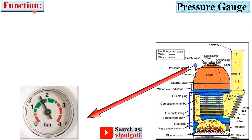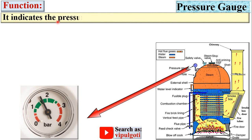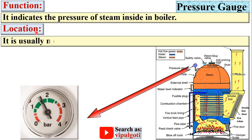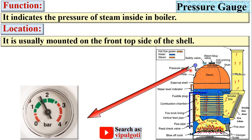Let's start with the function of the pressure gauge. It indicates the pressure of the steam inside the boiler shell. It is usually mounted on the front top side of the shell. In the pressure gauge, the red color indicates the low pressure and high pressure zones.